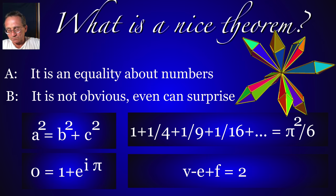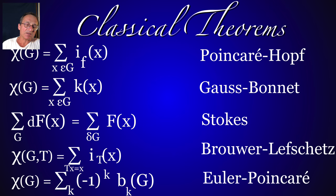Here's some classical theorems. So what is a nice theorem? A theorem is nice if it has a left-hand side and the right-hand side, and these two sides are the same. And it's not so obvious that they are the same. So here are some theorems. I'm not going into them. They're described elsewhere.